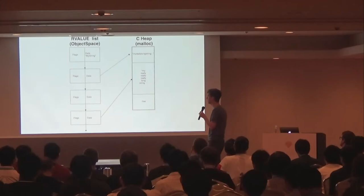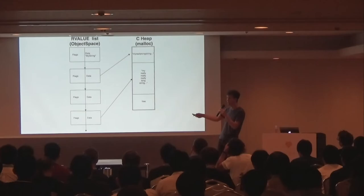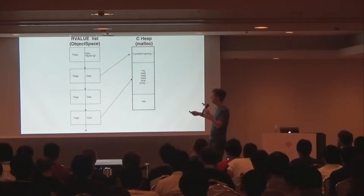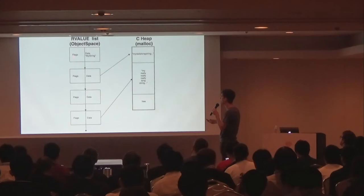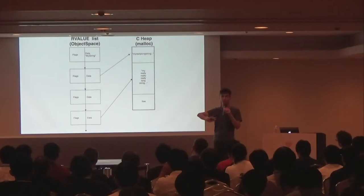It looks like this — a heap page. There are many of these, probably around 80 just when you start an IRB session. They are lists of 408 RValues per page plus empty slots. Some RValues contain data right in there; some will point to malloc space. It literally just calls malloc and gets a pointer back, and then it's the allocator's problem. Ruby doesn't touch it anymore.